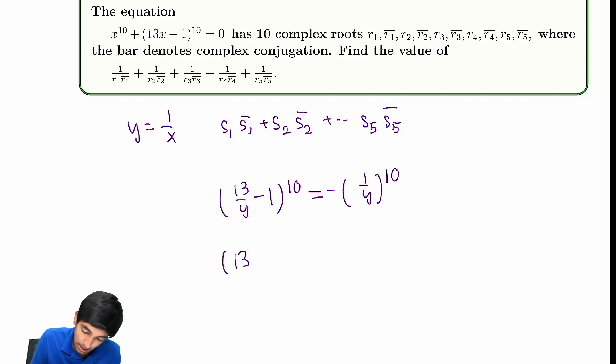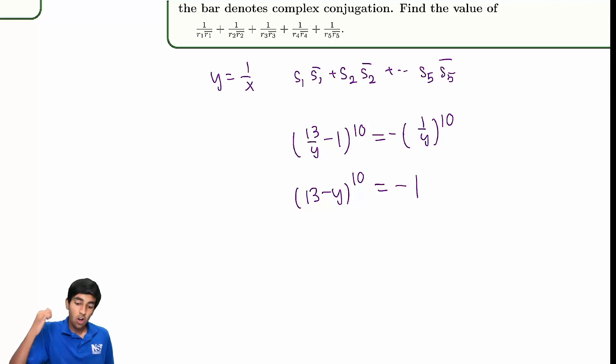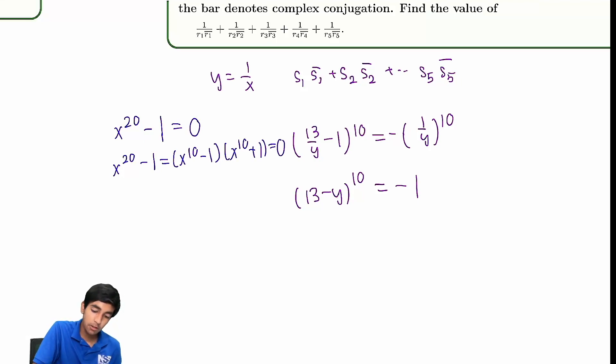Now we have 13, right? 13 over y. We're going to divide this. So 13 is the first part. And then minus y to the 10th. Look at how nice that is. Equals negative 1. So what are the solutions to this? You probably remember this from earlier. If you have x to the 20 equals 1, we can factor this as, well, we can rewrite it as this and factor it like this. As you can see, the solutions to x to the 10th plus 1 are all the 20th roots of unity that are not 10th roots of unity.